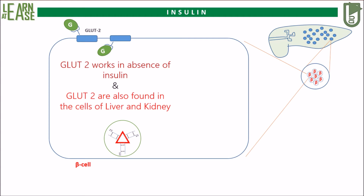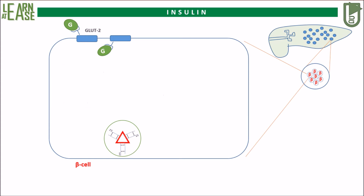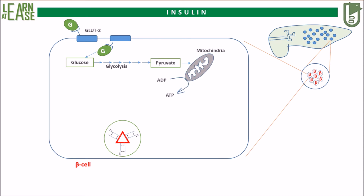Once glucose enters the cytoplasm of the beta cell, it will be converted to pyruvate by glycolysis, which eventually produces ATP through the electron transport chain in the mitochondria. This will shift the ATP to ADP ratio.